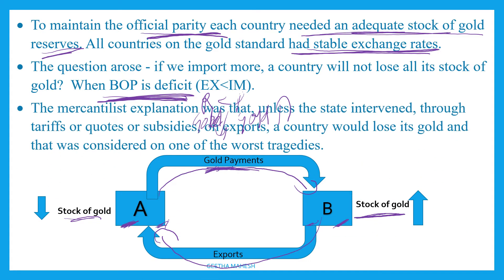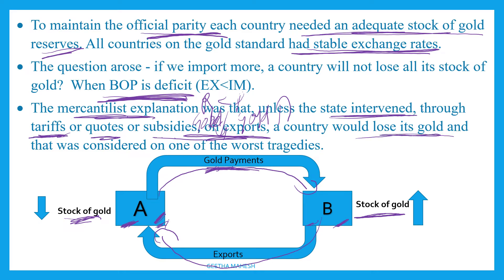This was seen as a problem. The mercantilists explained that it is a worst condition or tragedy for a country to lose its stock of gold. For that reason, mercantilists suggested that the state should intervene and control the flow of gold by imposing tariffs, quotas, or giving subsidies on exports — otherwise, the country would lose all its gold.